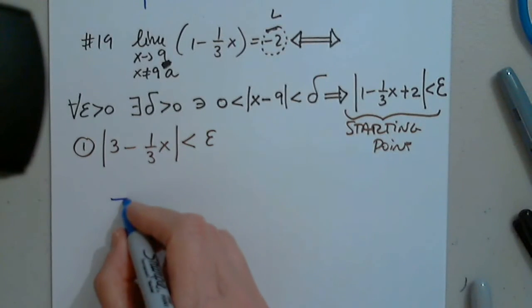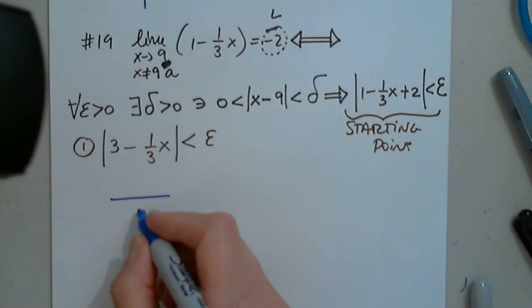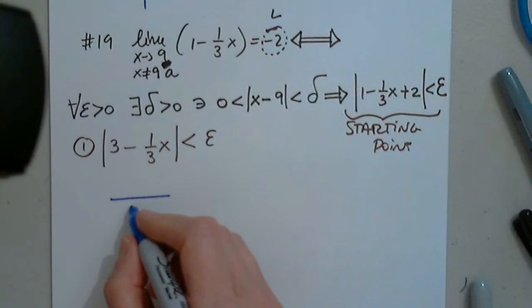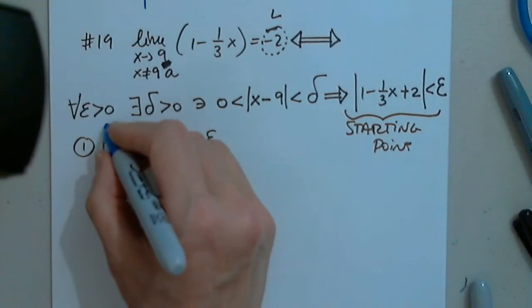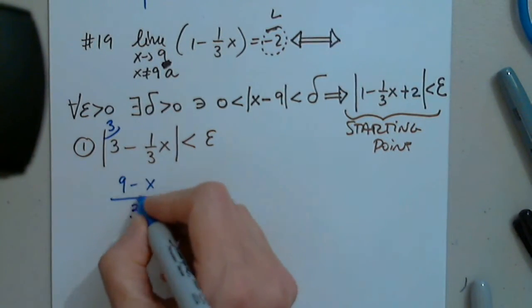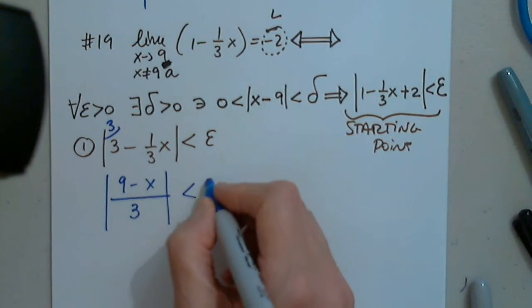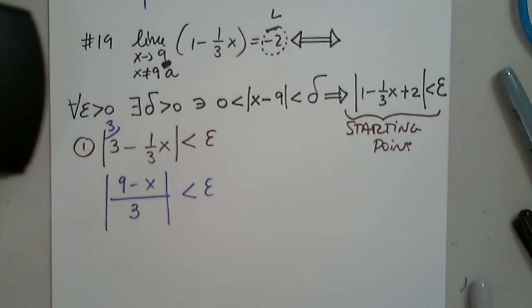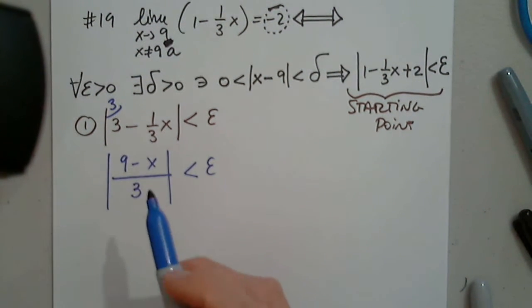Good. So what should I do? Give them the same denominator. Excellent, which is nine over three minus one-third. Very good. So it's three and they multiply this by three. Very good. So nine minus x in absolute value less than epsilon. Great job.